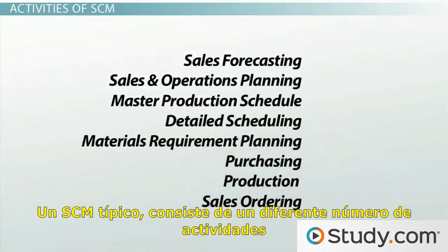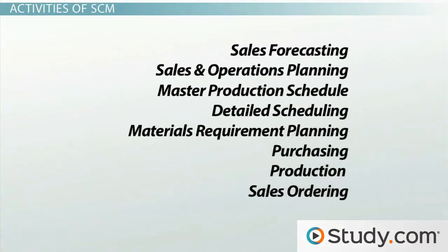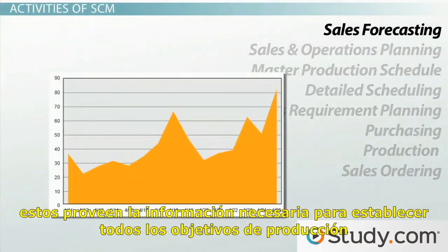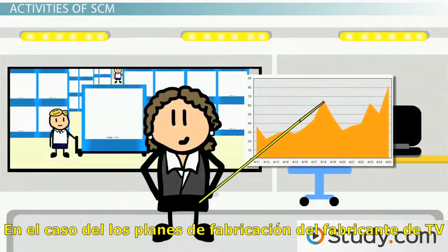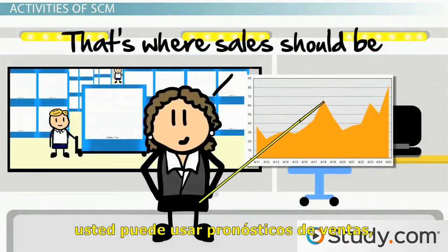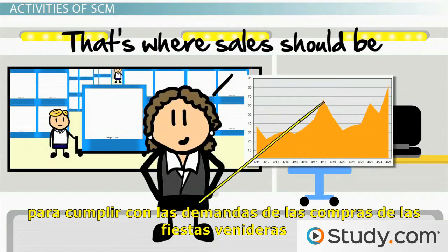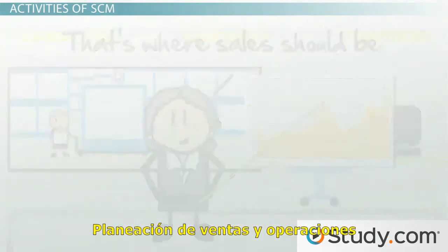A typical SCM consists of a number of different activities. Sales forecasting develops an estimate of customer demand, providing the information necessary to set overall production targets. In the case of the TV manufacturing plant, you could use sales forecasting to estimate by how much you need to increase production to meet the demand for the upcoming holiday shopping season.